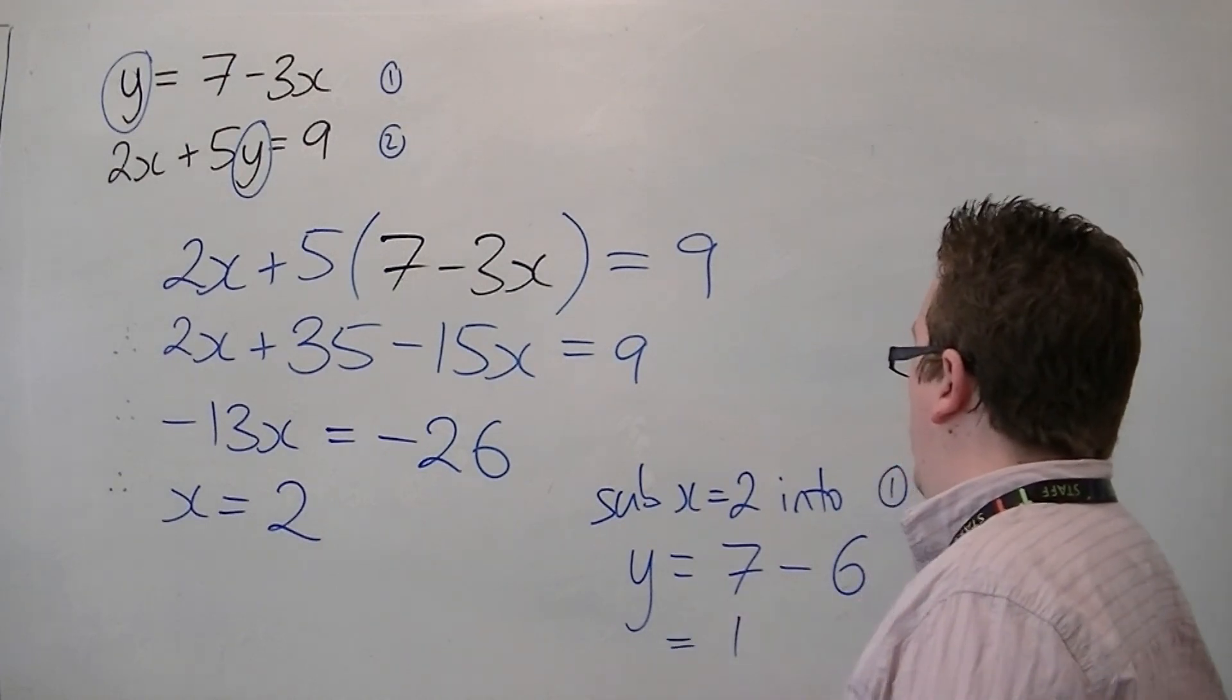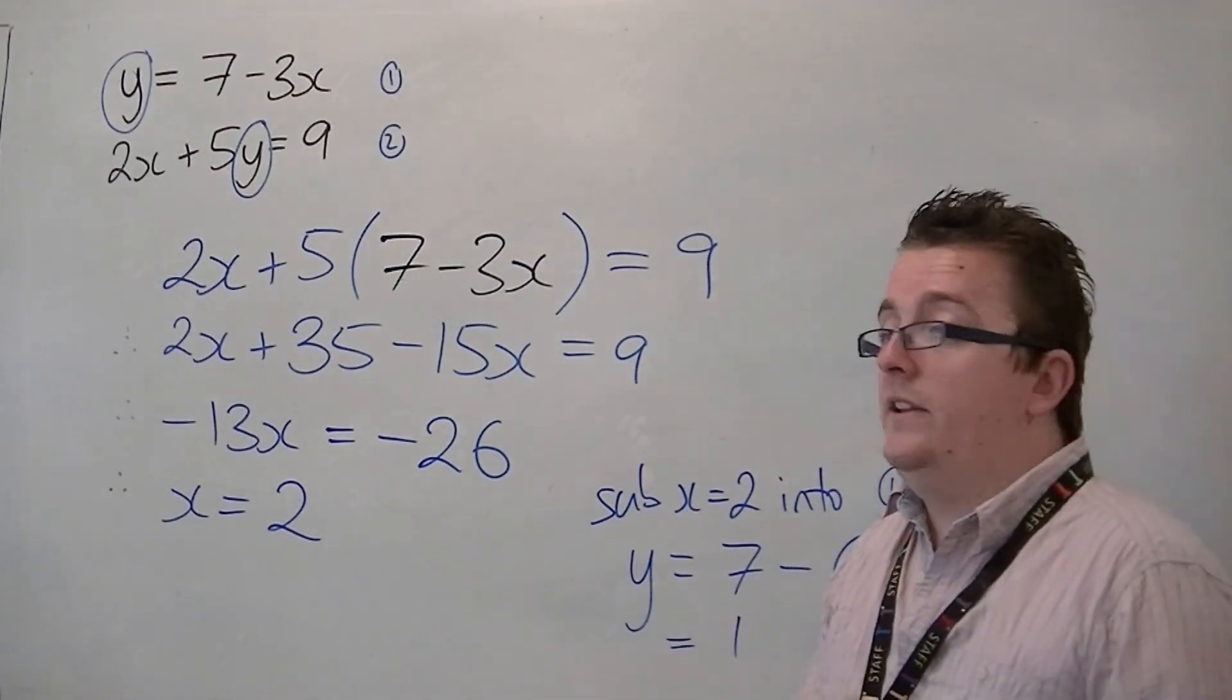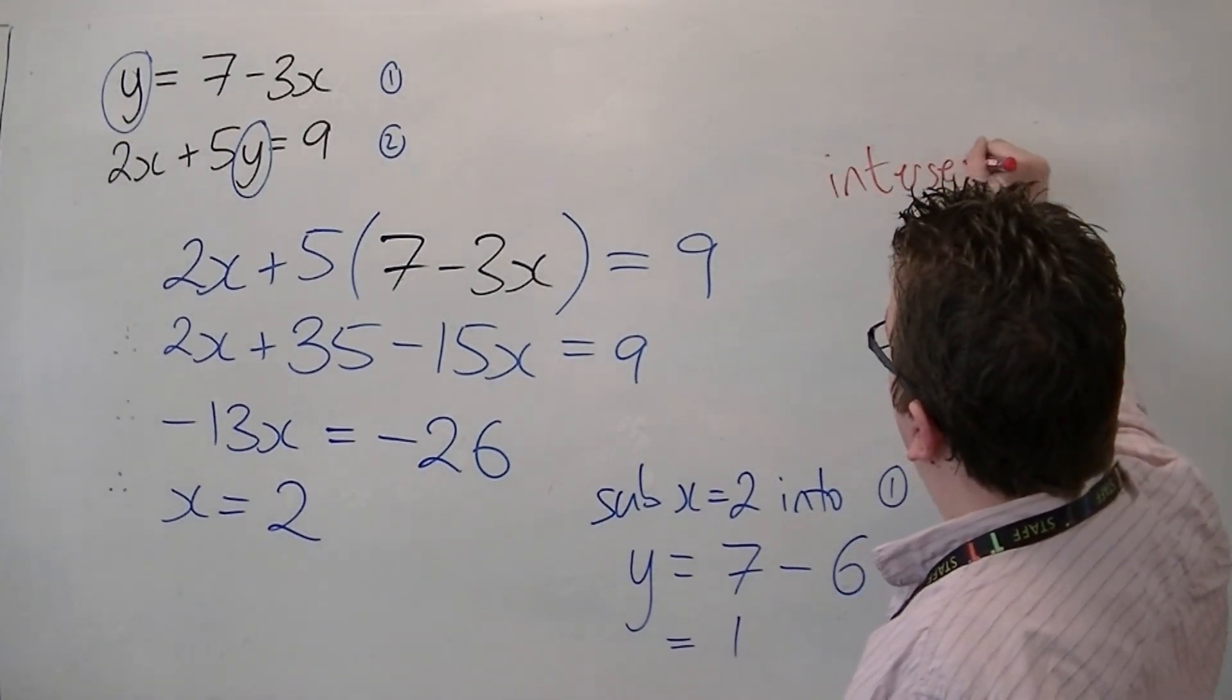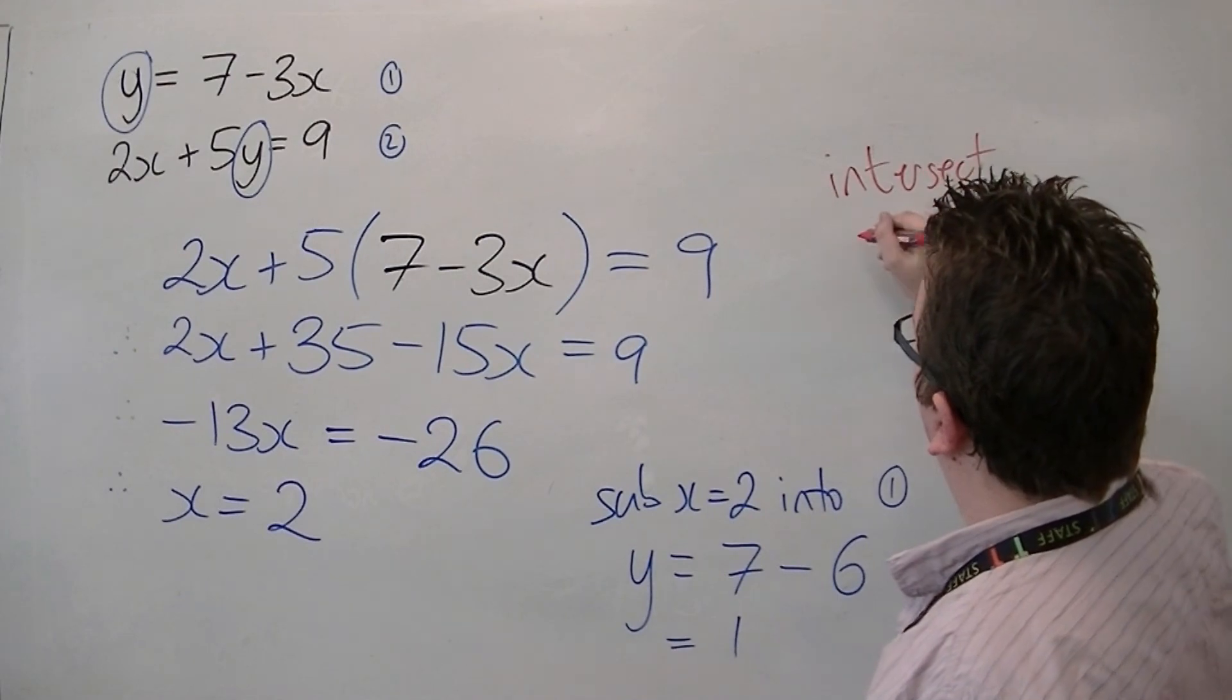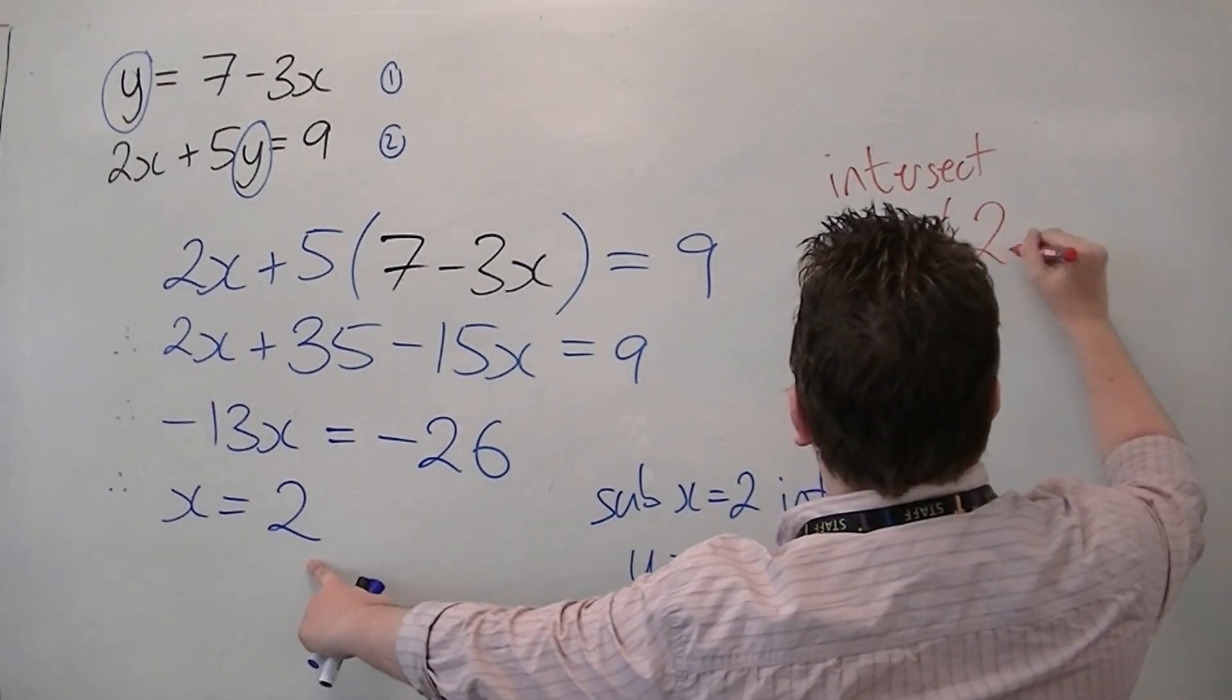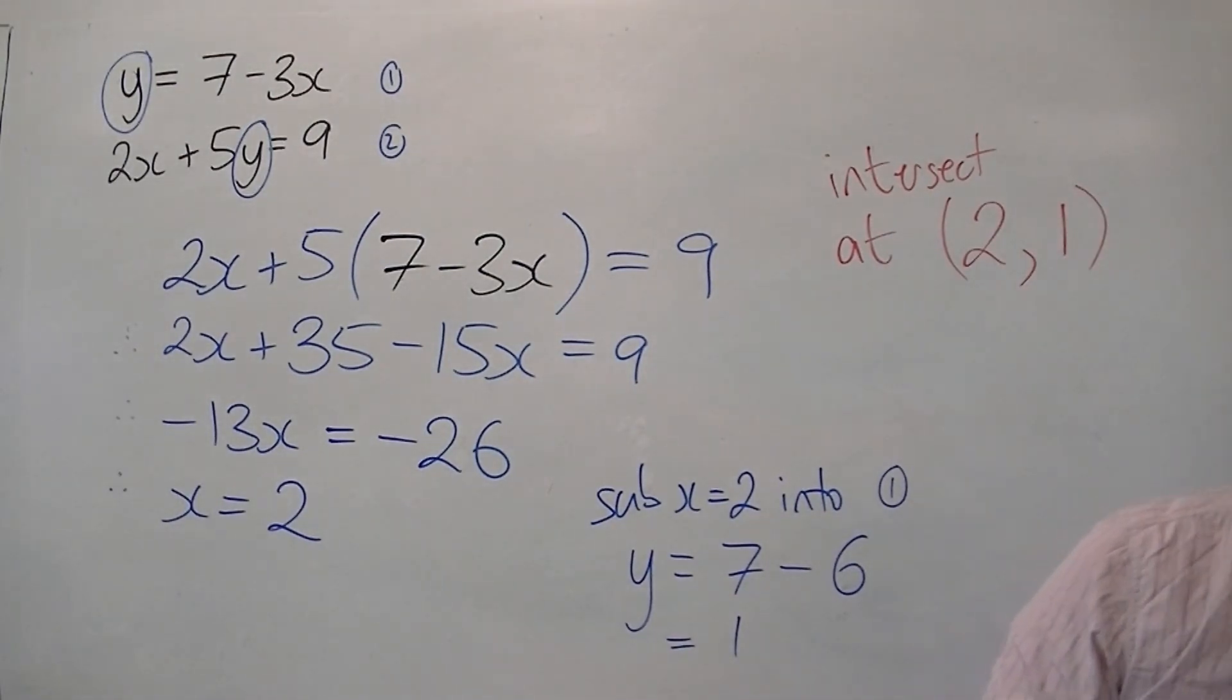So I can see that the two lines intersect at the coordinates x is 2, y is 1. So they intersect at 2, 1.